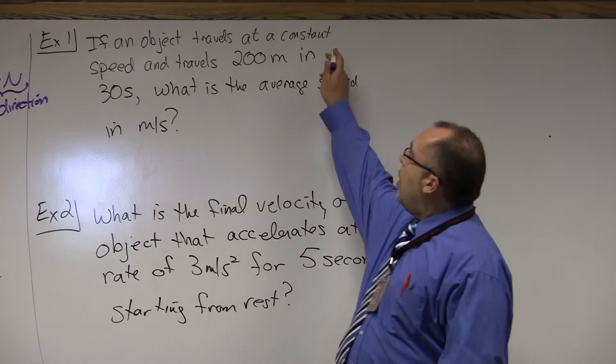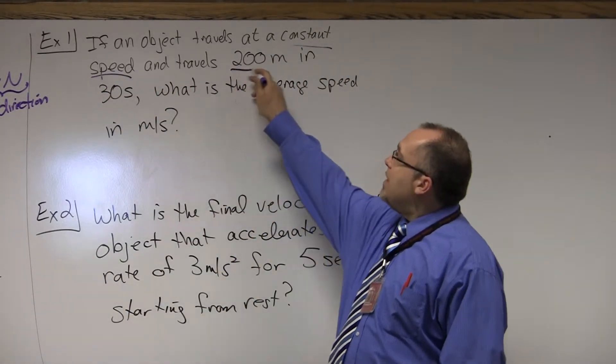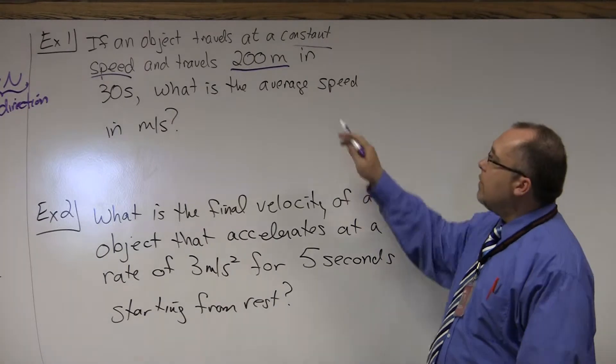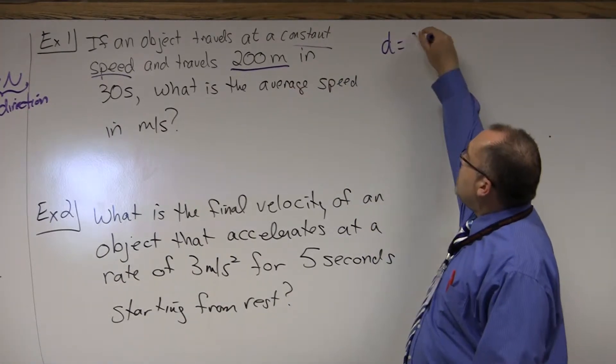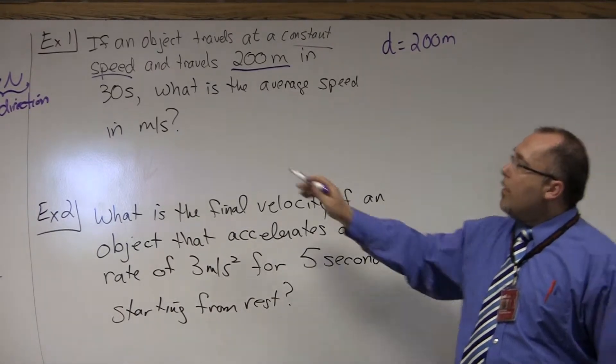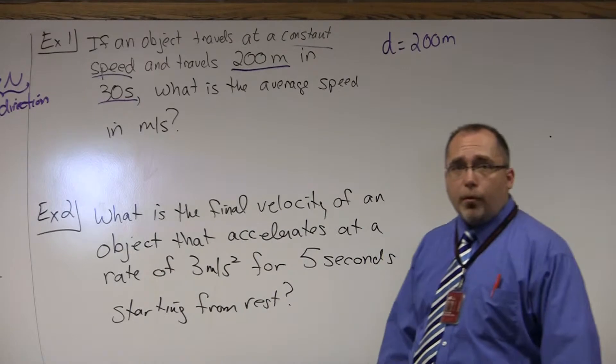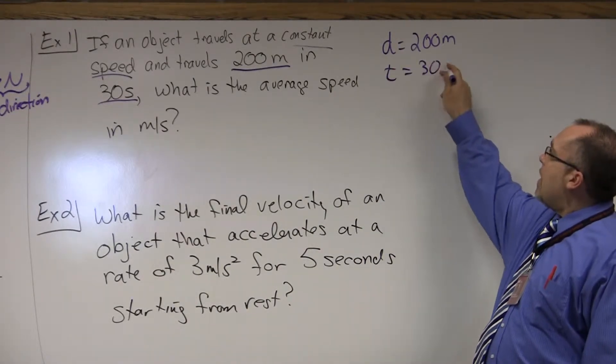Well, if you look at it, it travels at a constant speed. That's going to be key in a moment here. But it travels a distance of 200 meters. Notice the unit is meter, so it has to be a distance. We put distance equals 200 meters. In 30 seconds, 30 seconds actually would represent the time. We have a time of 30 seconds.